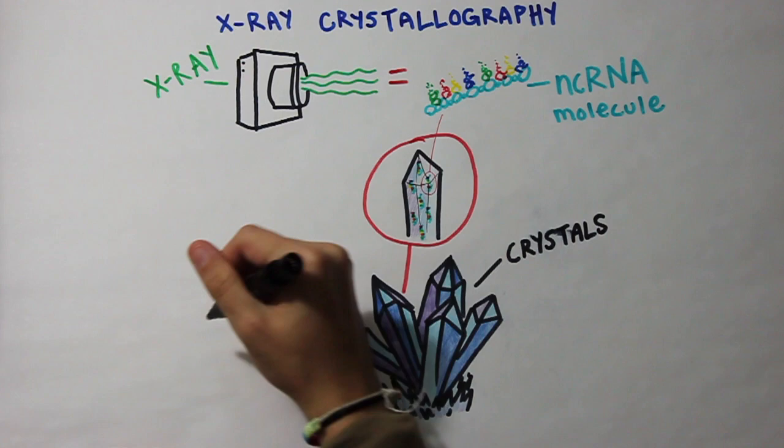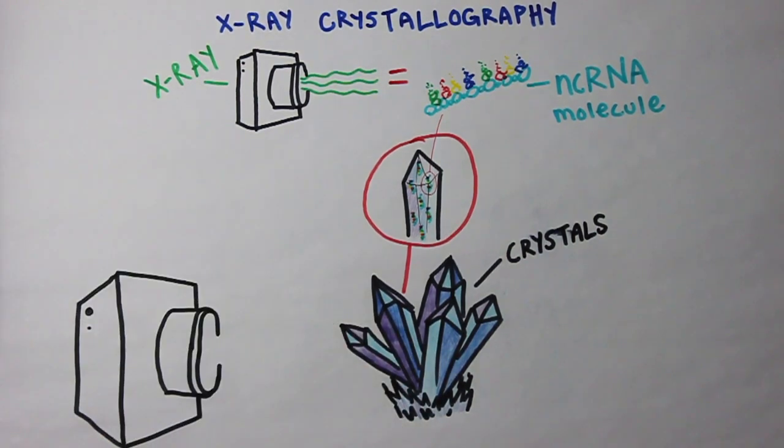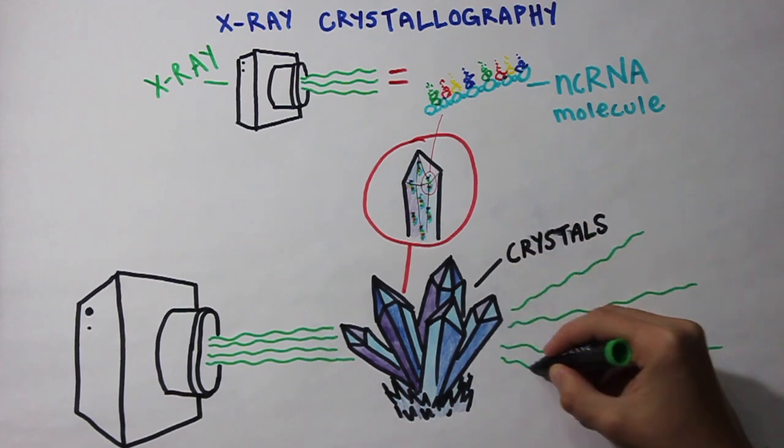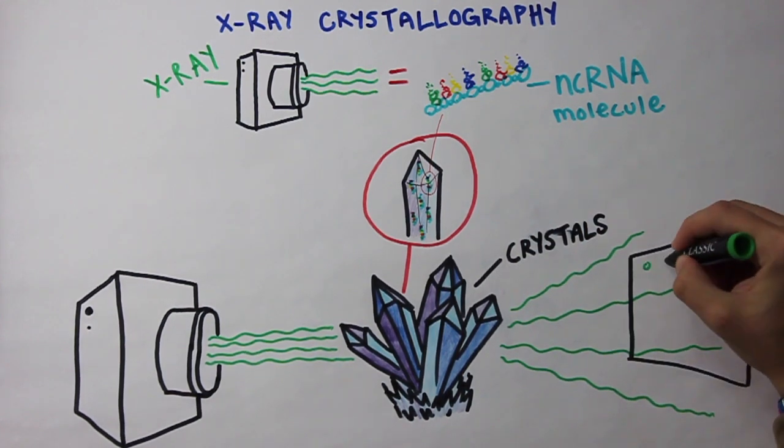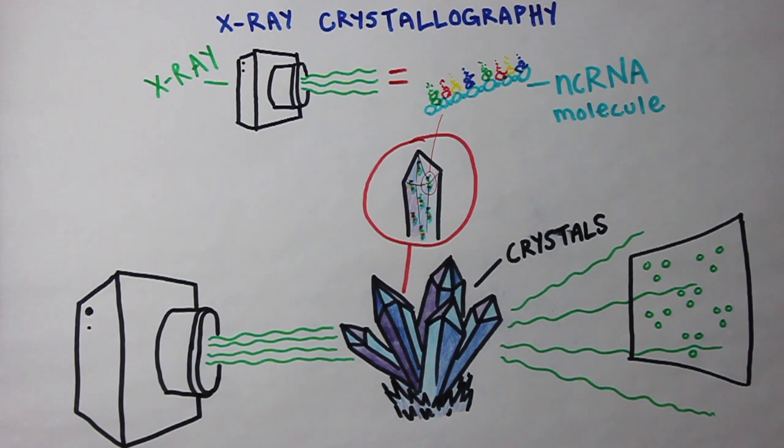From there, you project an X-ray beam through the crystal, which disperses the beam into what looks like little spots when captured on a solid surface. The location of these refraction patterns are dependent on the internal structure of the crystal.